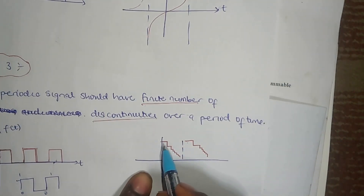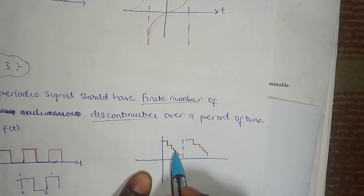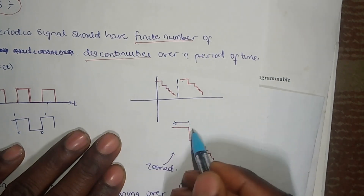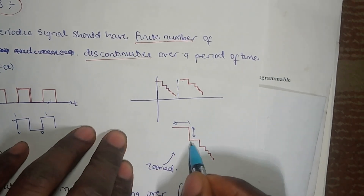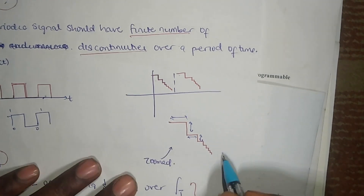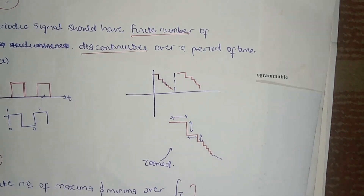Looking at this other signal, we have some value that keeps changing — it doesn't seem constant. If we zoom in, we can see that the width and height here are quite different from the width and height at another point. So it tends to infinity and keeps going to some point where you won't even recognize the pattern of the signal. Such a signal doesn't have a finite number of discontinuities; it's changing in a random fashion.